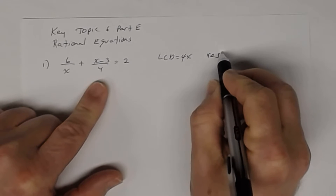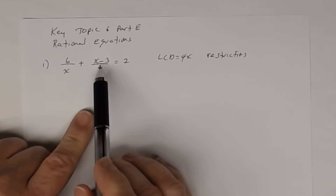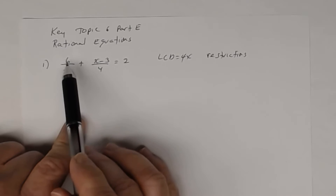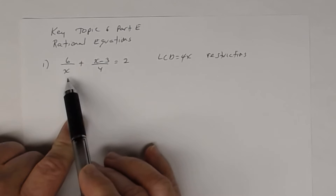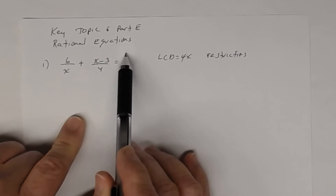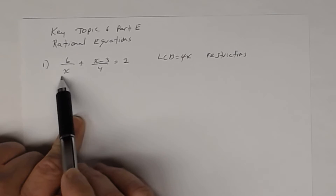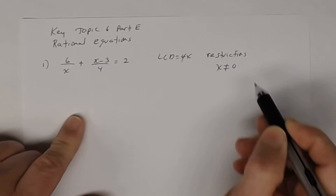Now we have to find the restrictions. The restrictions are the values of the variable that make the denominator zero, because you can't divide by zero. For example, 6 divided by zero is undefined. In this expression, the denominator is zero when x is zero, so one restriction is that x cannot equal zero.